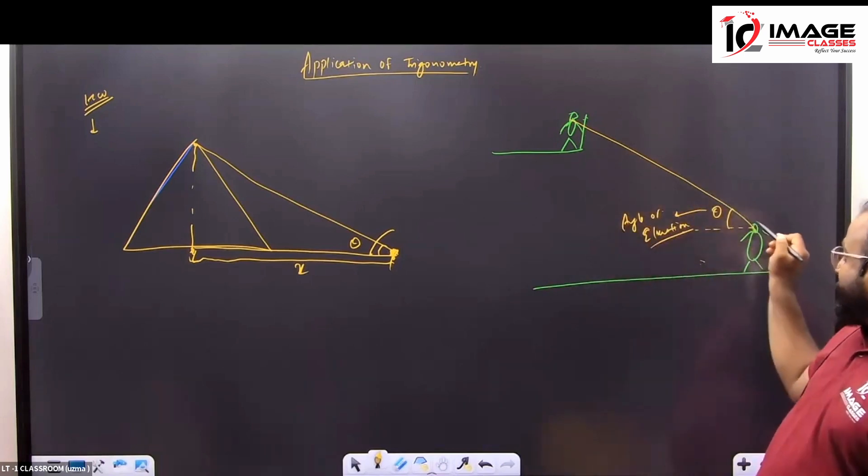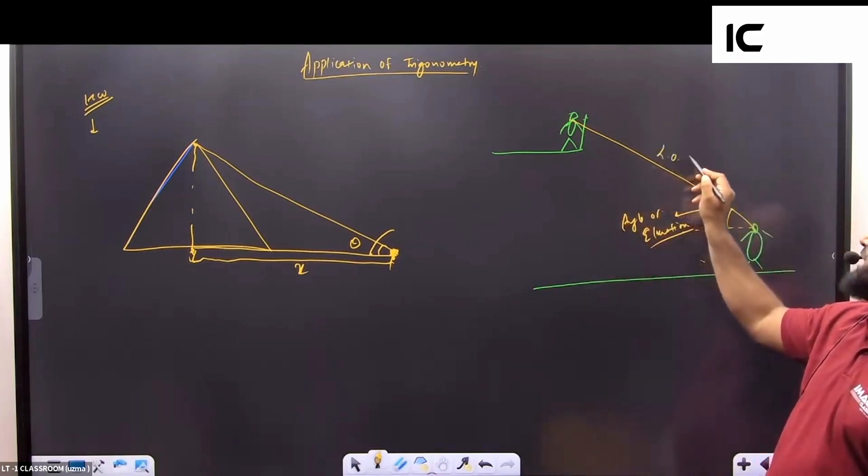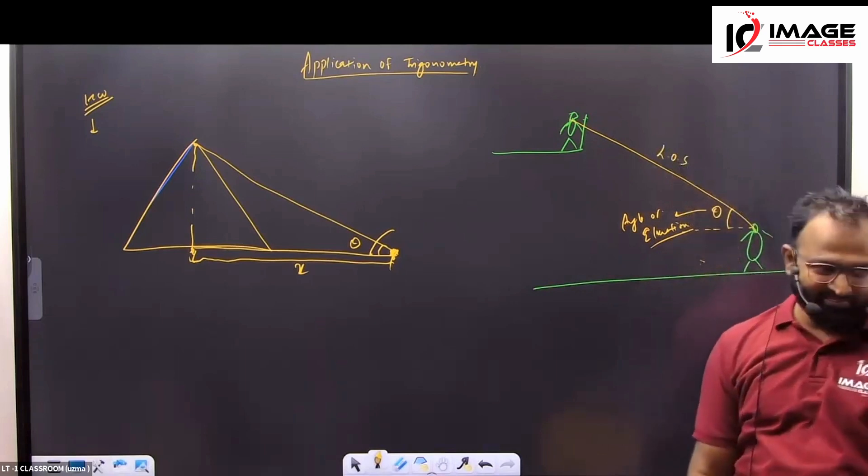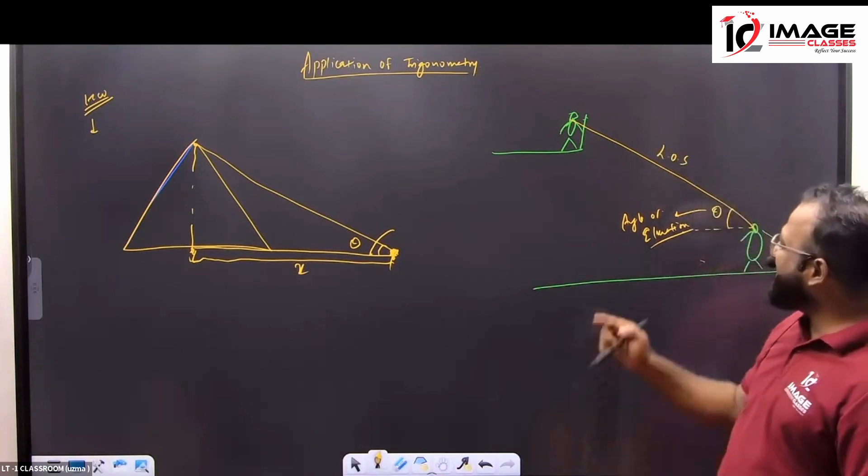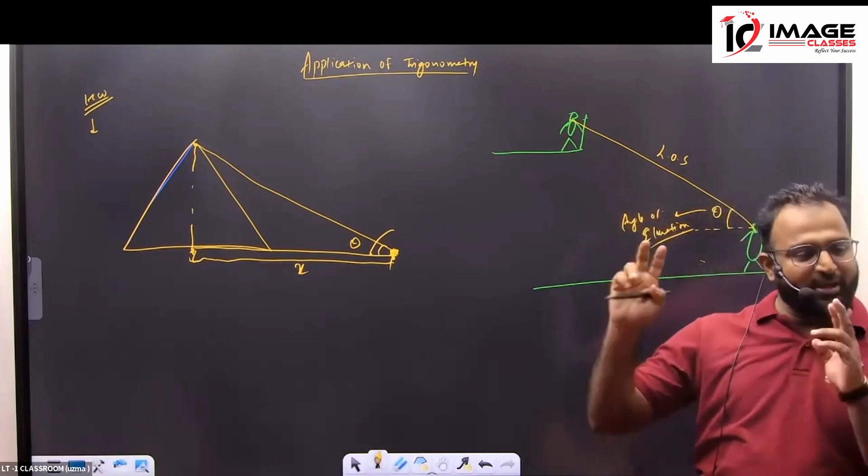And the other thing, which I am looking at the line of sight, I am saying it as a line of sight. Do you understand? This is our line of sight. In the whole chapter, there are two angles.